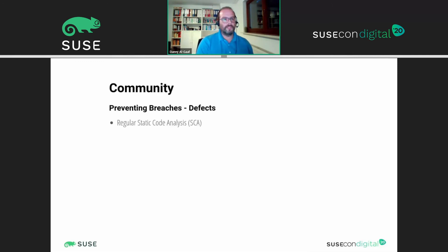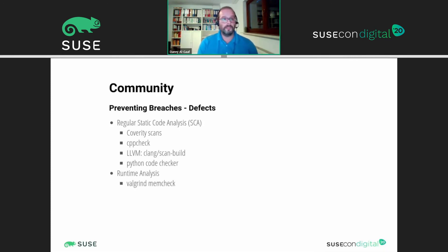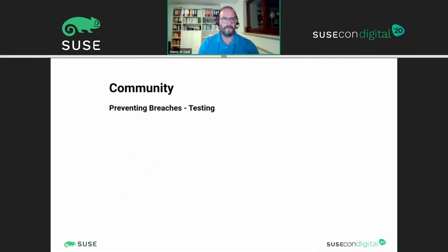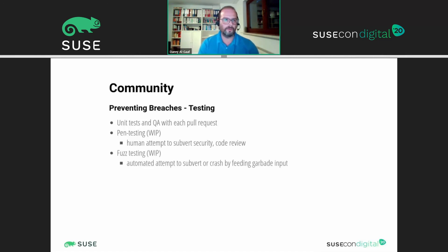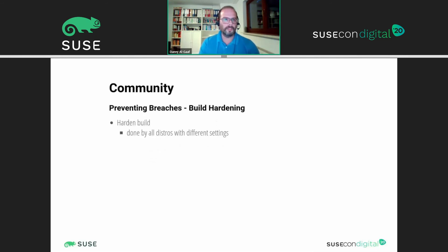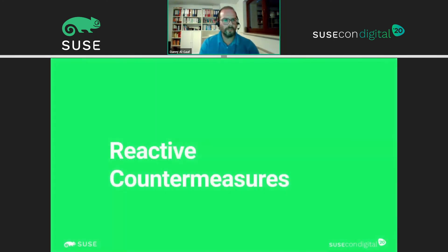Preventing breaches: the community runs on a regular basis static code analysis with several tools to find issues and also runtime analysis to find bugs, and there's a very close code review process. We have unit tests and QA for each pull request. We're still in progress on penetration testing to find real security issues not covered by other tests, and similarly fuzzy testing for automated tests on garbage input to see if something unexpected happens. The build system is hardened — currently done in one way or another by all distros, most of which use specific hardening flags for the build process.